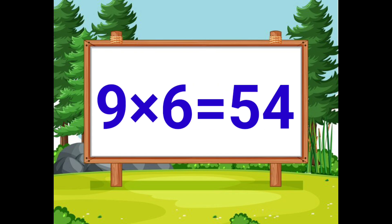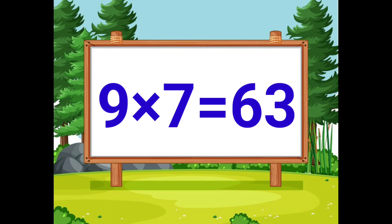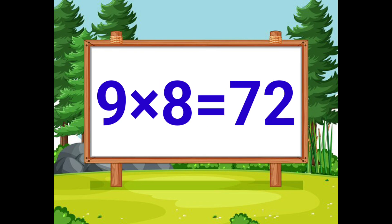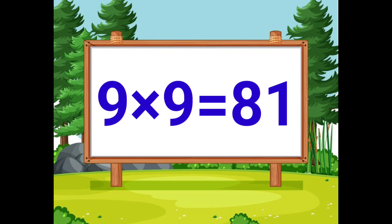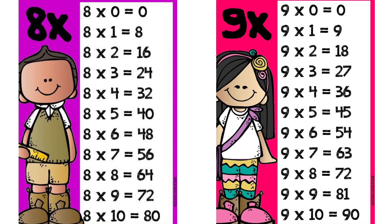9 sixes are 54. 9 sevens are 63. 9 eights are 72. 9 nines are 81. 9 tens are 90. Let's repeat the 8th table and 9th table one more time.